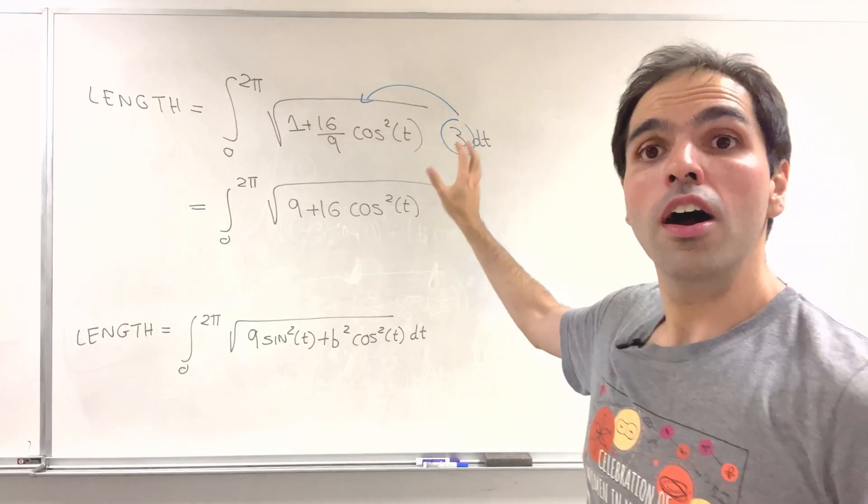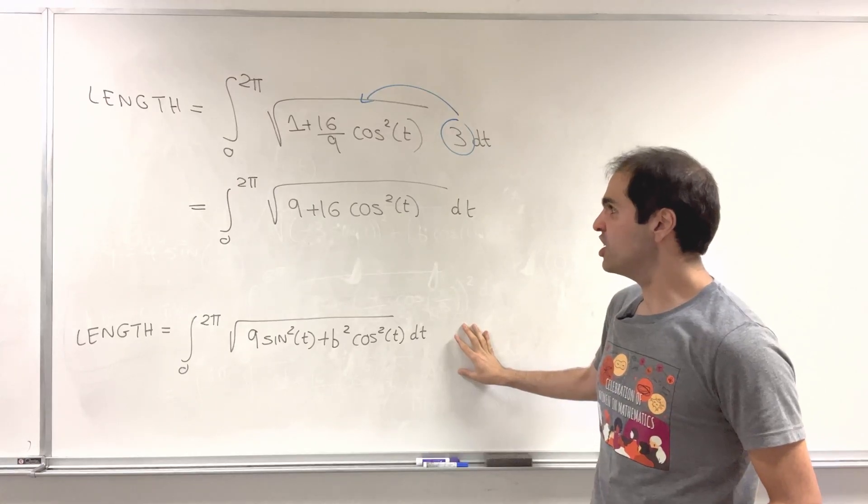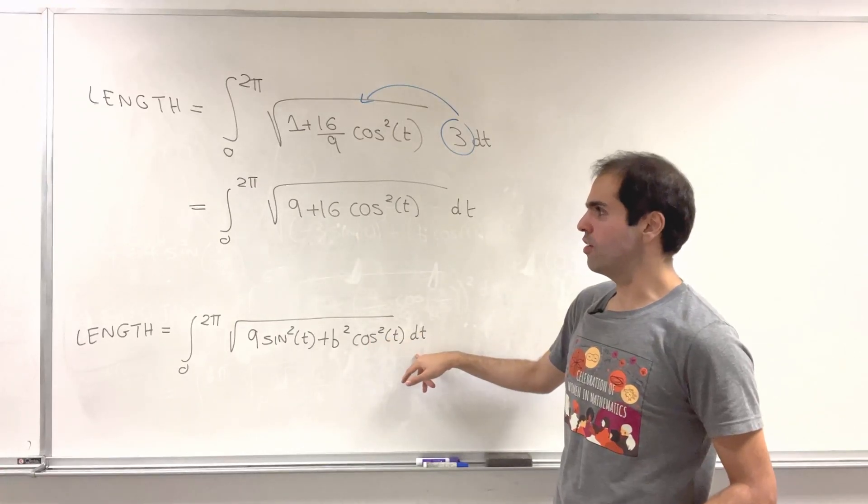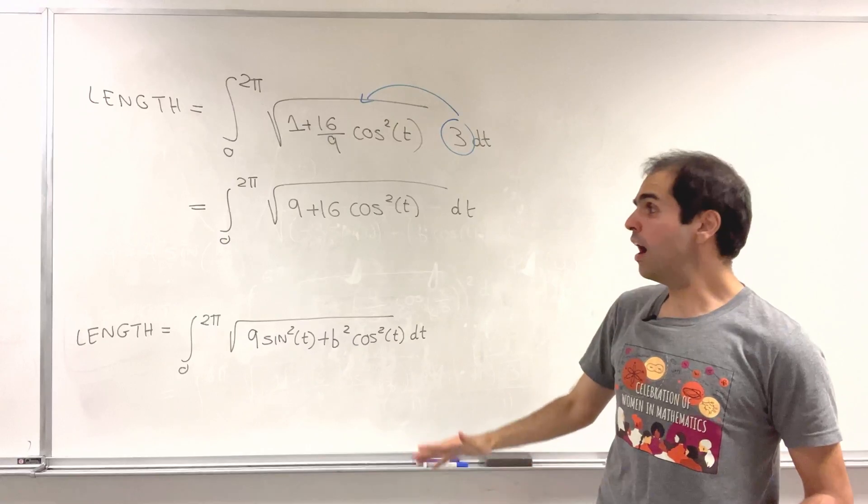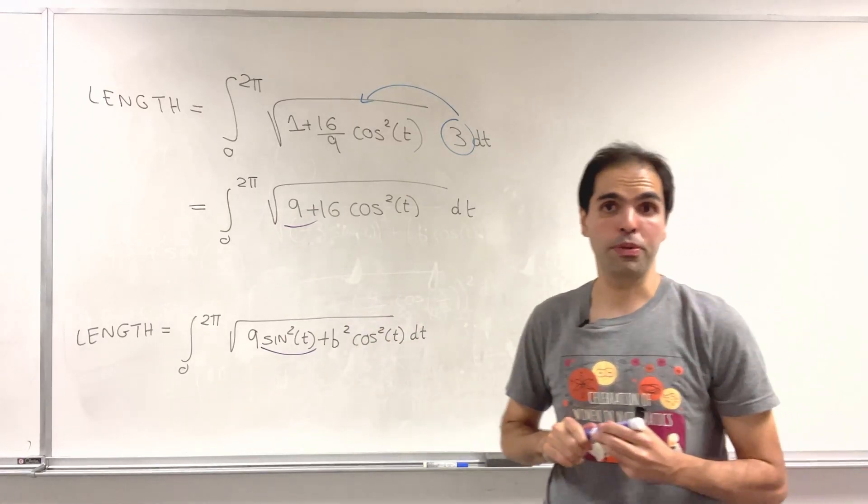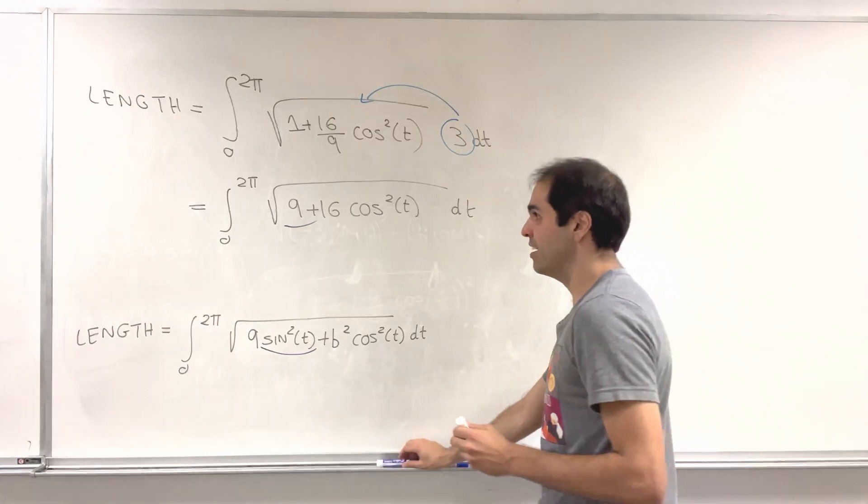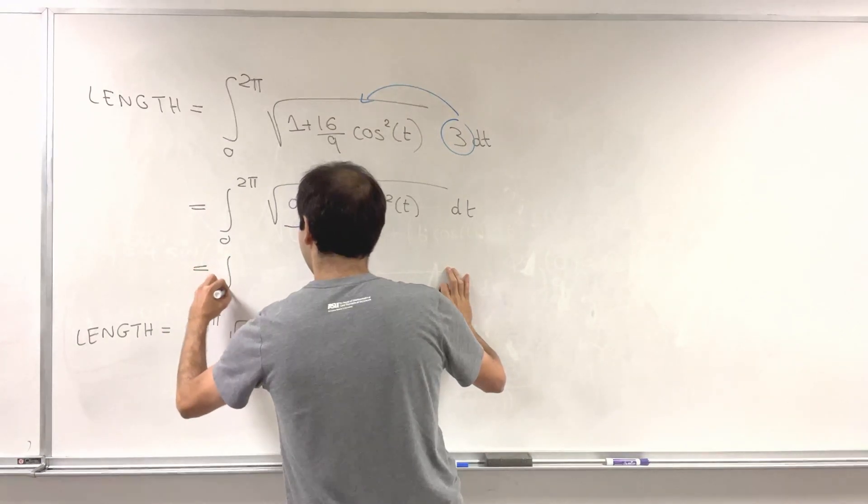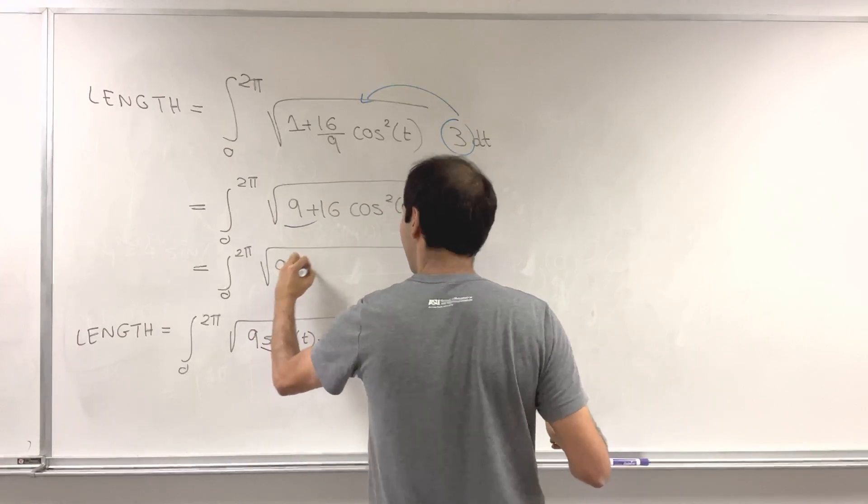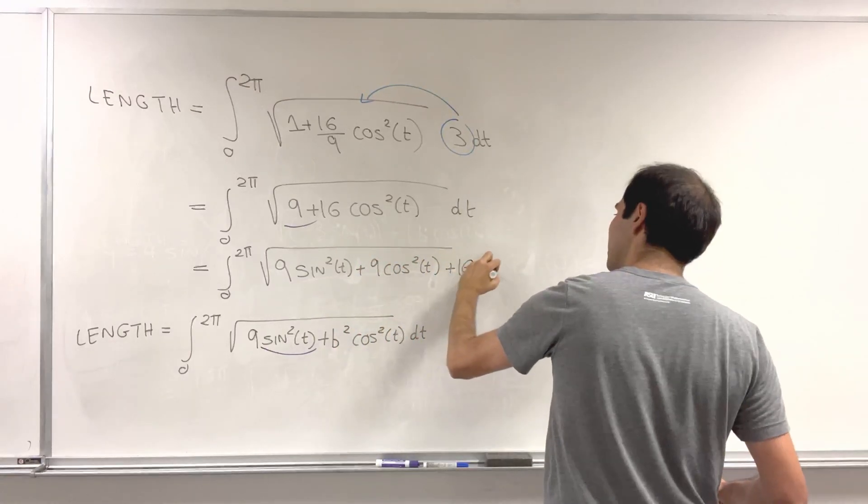But now compare the length that we got here with the one we got using parametric equations. Well, those look kind of similar. We have a cosine squared, we have 0 to 2 pi. The only question is, how do we make a sine squared here appear? And for this, we just use cosine squared plus sine squared equals 1. So in fact, 9 gives you 9 sine squared of t, plus 9 cosine squared of t, plus 16 cosine squared of t.